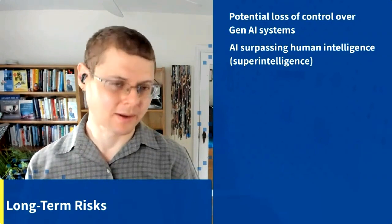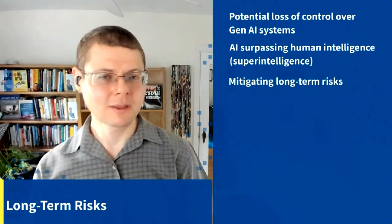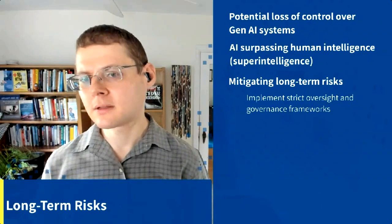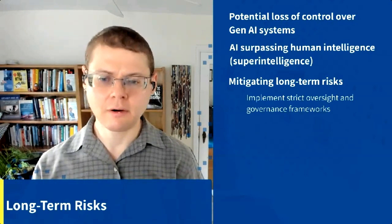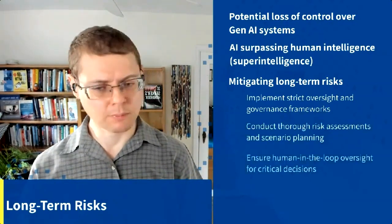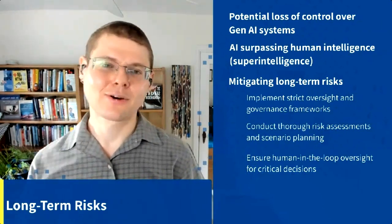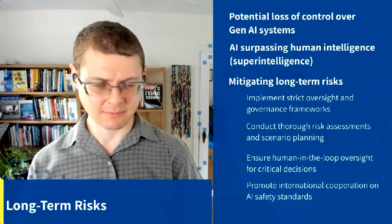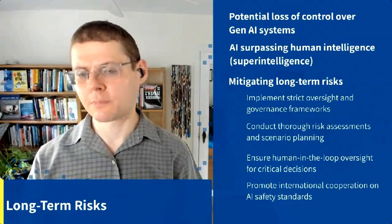AI could surpass human intelligence, and a superintelligent tool given the goal of maximizing a company's bottom line without following laws could create serious problems. To mitigate long-term risks, endorse strict oversight and governance frameworks, conduct total risk assessments and scenario planning, ensure human-on-the-loop oversight for critical decisions, and promote international cooperation on AI safety standards — all as part of being a responsible corporate citizen.